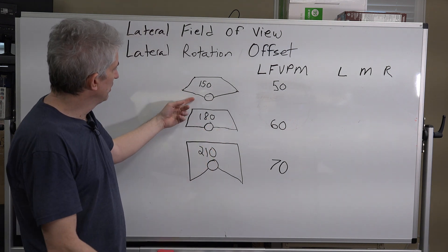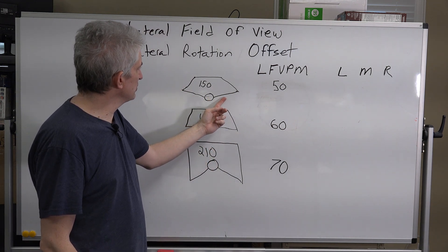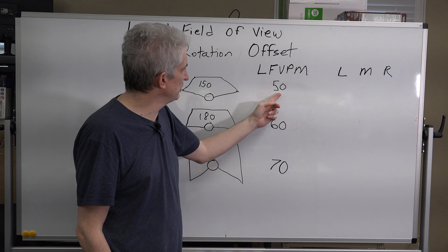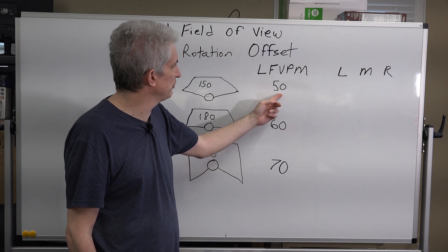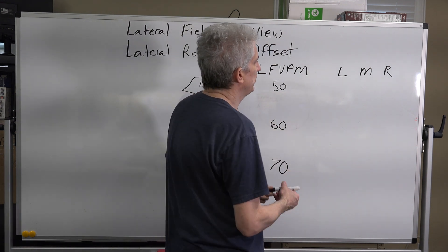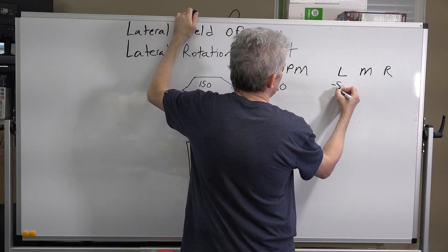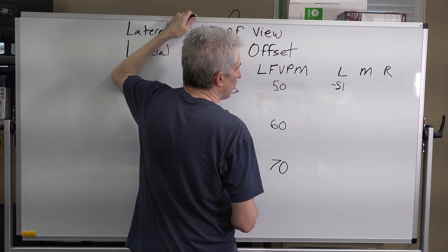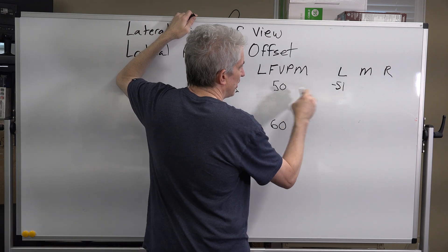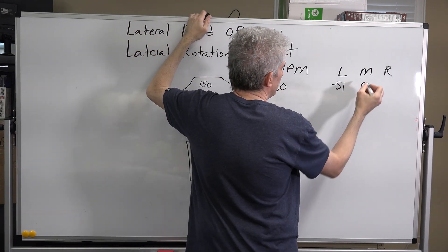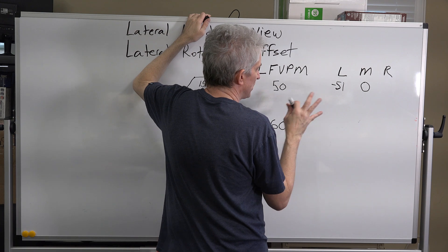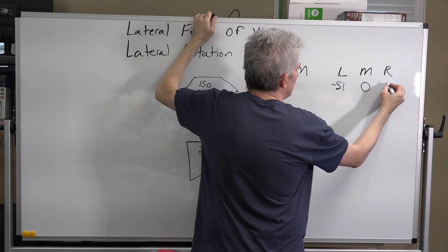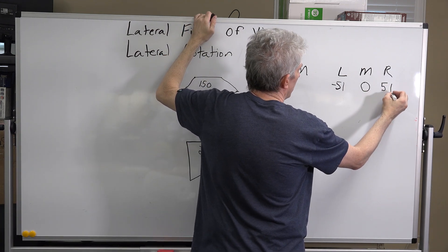So in this scenario, 150 degrees of total lateral view, 50 degrees of lateral field of view per monitor. What do we put for our left? I'm going to put negative 51, because I want to go one extra degree to account for the bezel. Always zero in the middle, unless you're doing something wonky. And then positive 51 on the right.